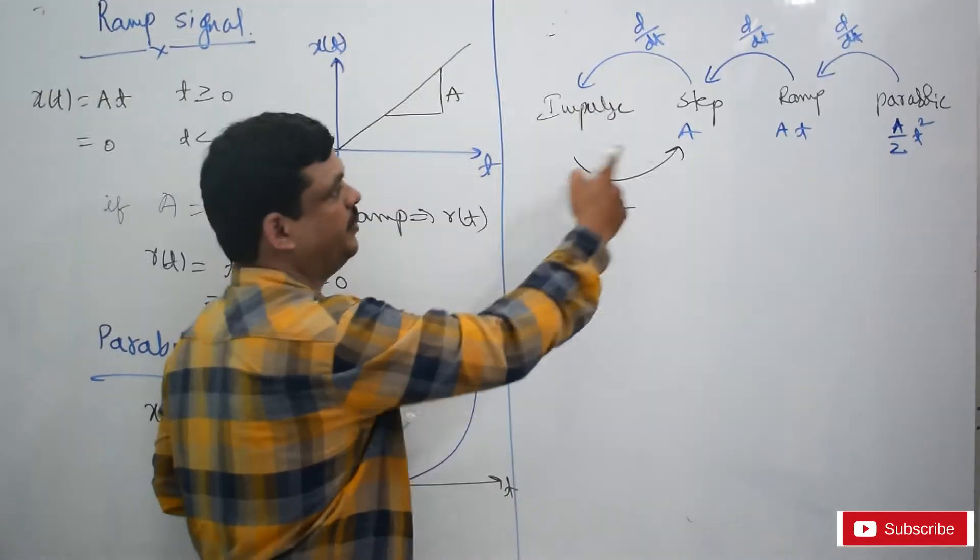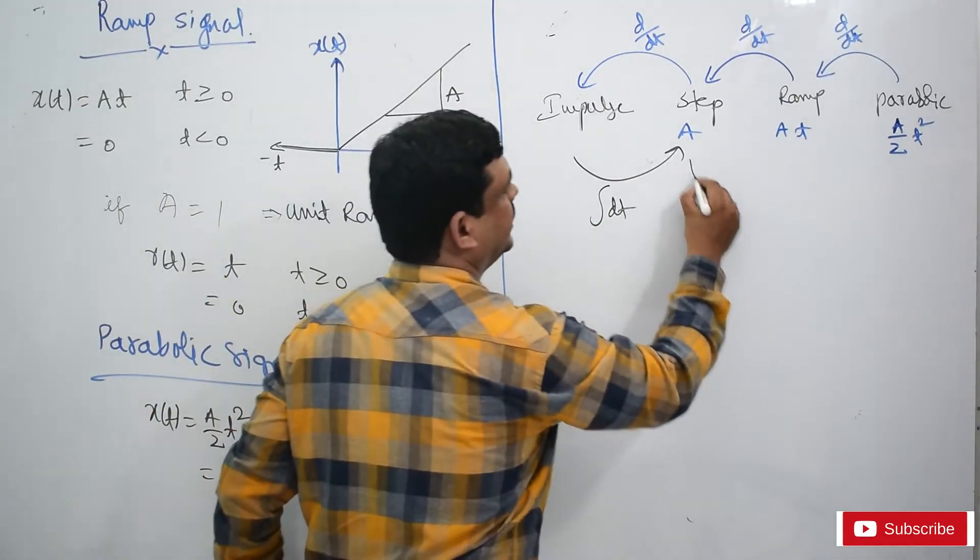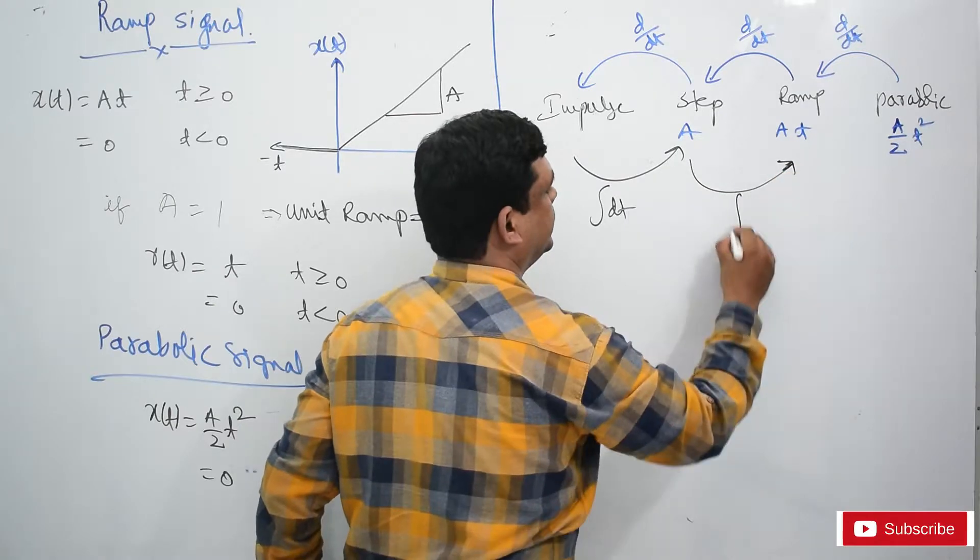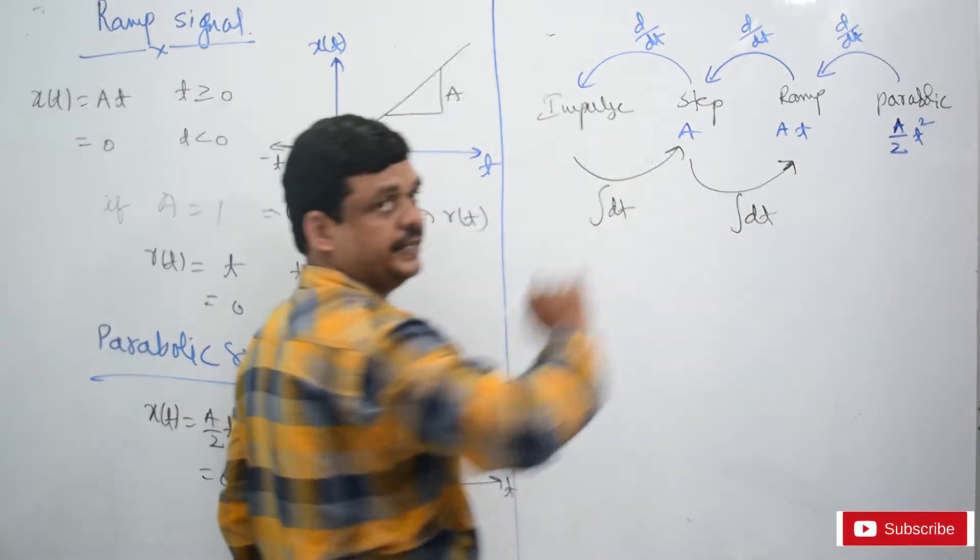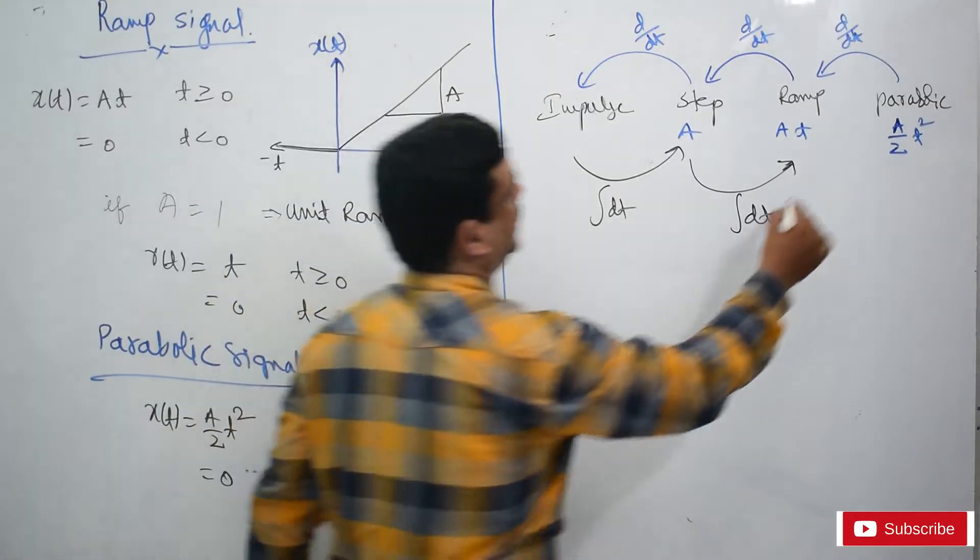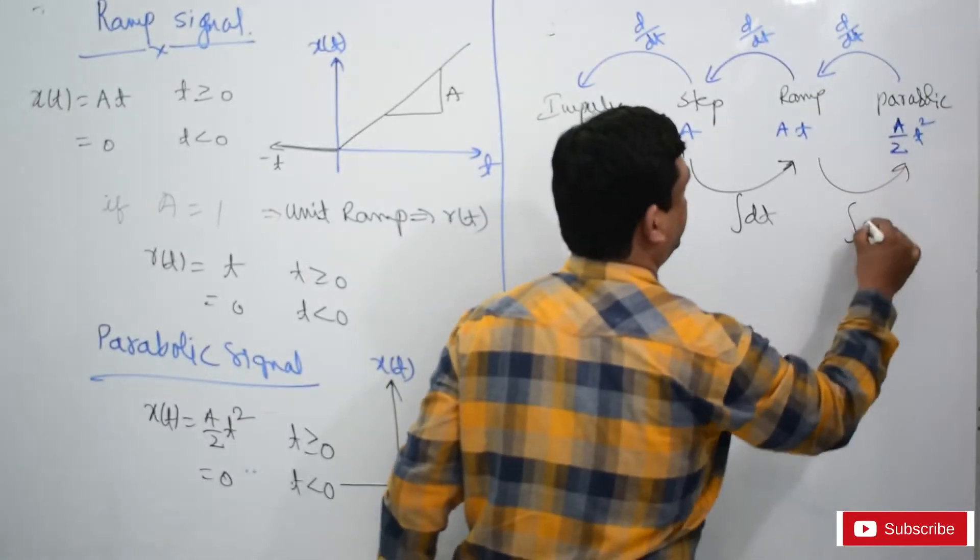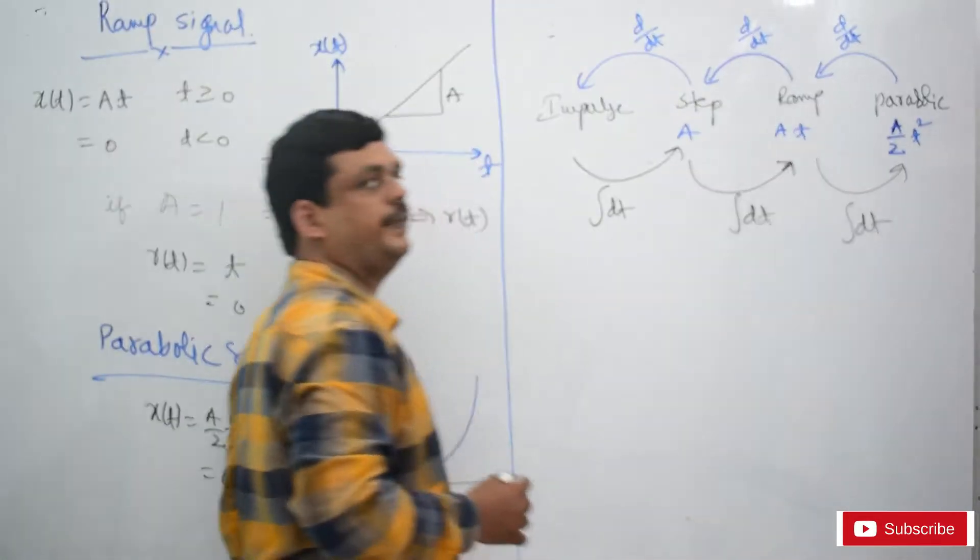Integration of impulse is step, and integration of step is ramp, and integration of ramp is parabolic.